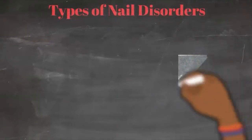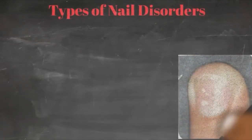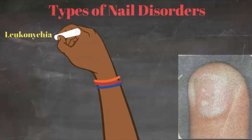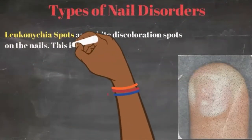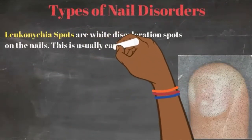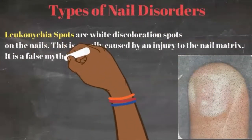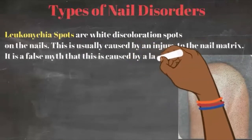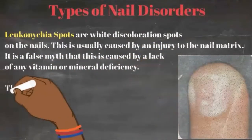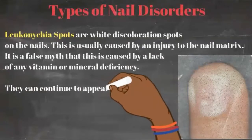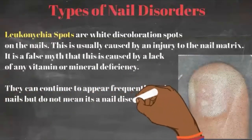The next one is called leukonychia spots. These are white discoloration spots on the nails, usually caused by an injury to the nail matrix. It is a false myth to think this is caused by a lack of any vitamin or mineral deficiency. They can continue to appear frequently in some nails, but it doesn't mean it's a nail disease. As long as the nail grows out normally, the spots can eventually disappear.